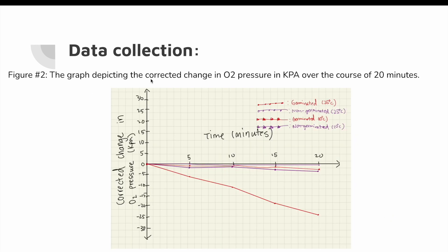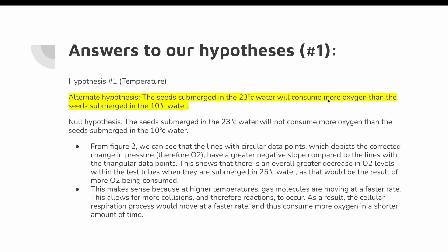Figure two is the graph depicting the corrected change in O2 pressure in kPa over 20 minutes, showing lines for germinated and non-germinated seeds at different temperatures. For hypothesis one, the alternate hypothesis is correct: the lines with circular data points — depicting corrected pressure change in the 23°C condition — have a greater negative slope than the lines with triangular data points. This shows a greater overall decrease in O2 levels at 23°C, consistent with more O2 being consumed. This makes sense because at higher temperatures, gas molecules move faster, allowing more collisions and reactions, so cellular respiration proceeds faster and consumes more oxygen in a shorter time.